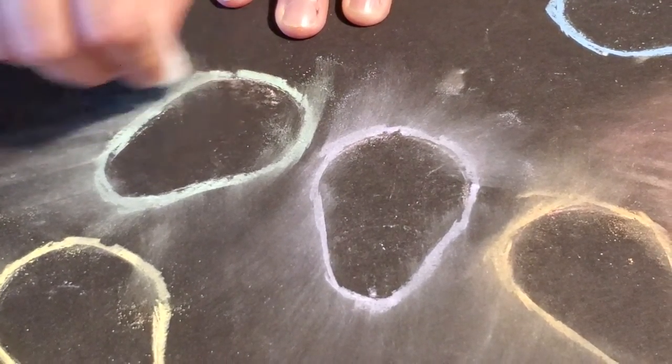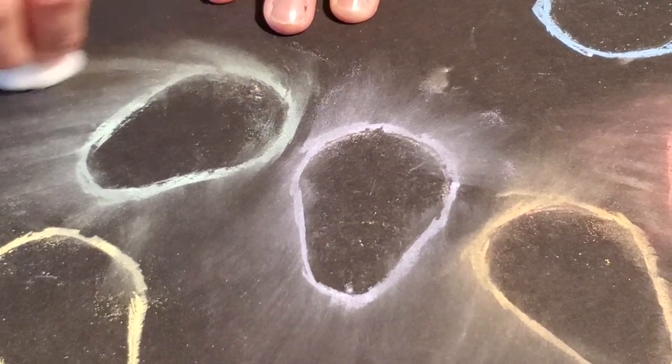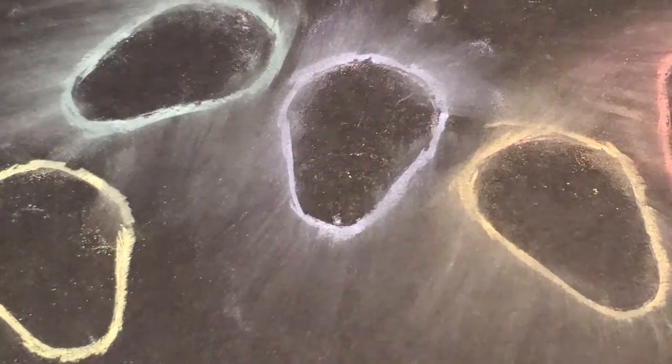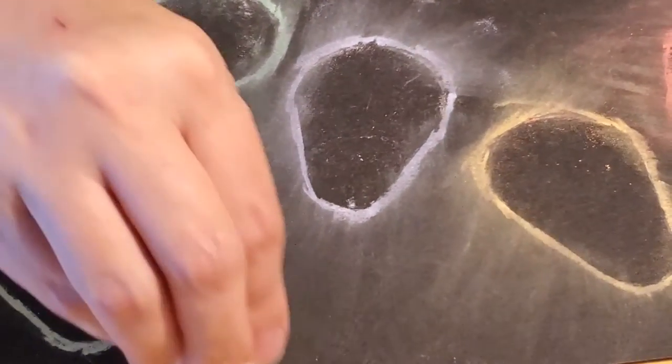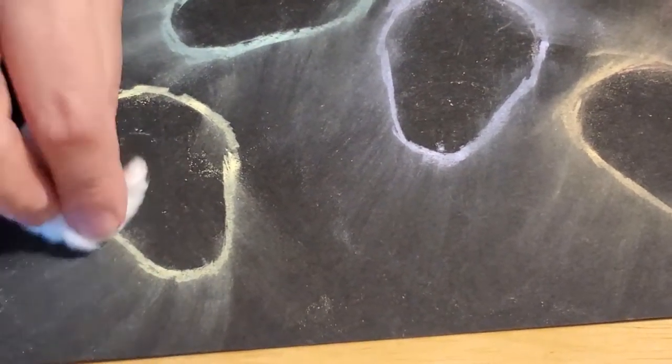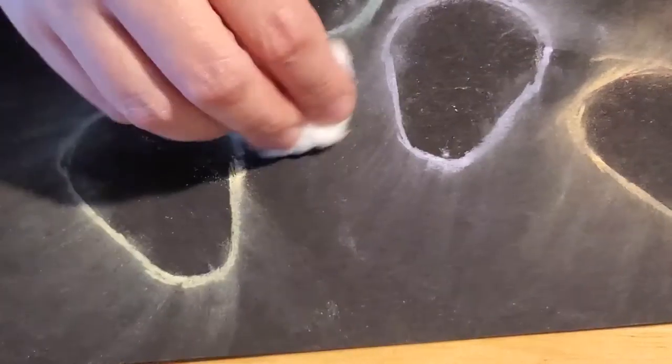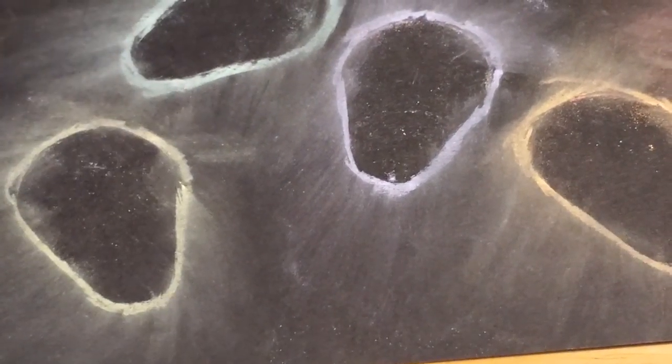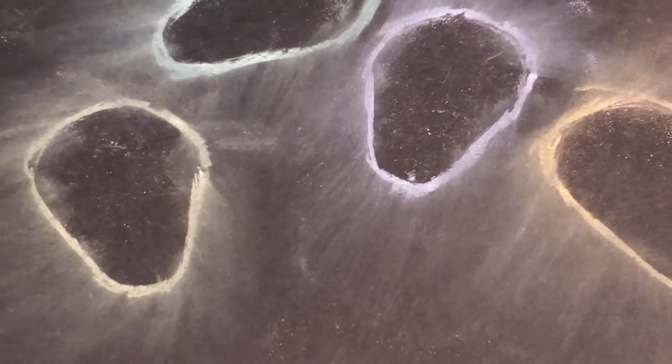And then maybe we'll get a new cotton ball for green here. Get the green shining off. If you don't think that it's giving enough of a brushed shine, you can go over your drawing again with your chalk. And then smear again. Like that. And then last but not least, we have the blue.